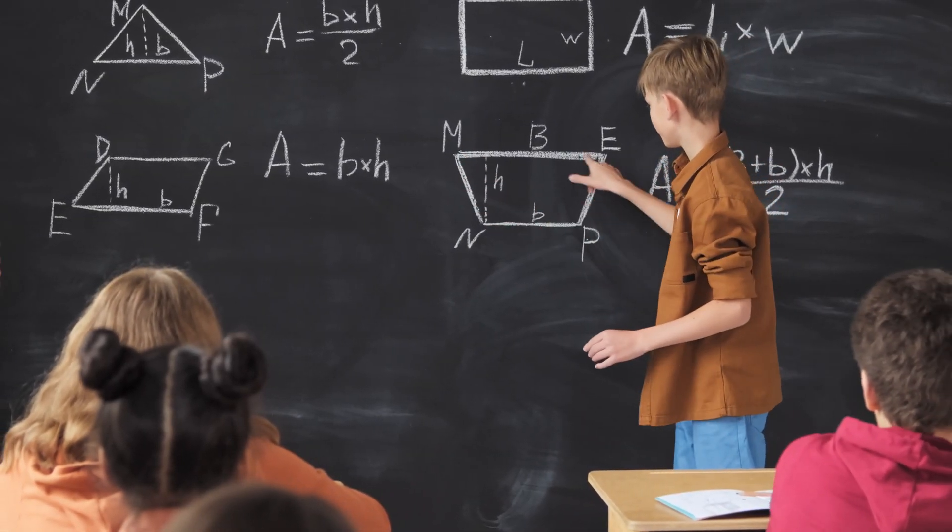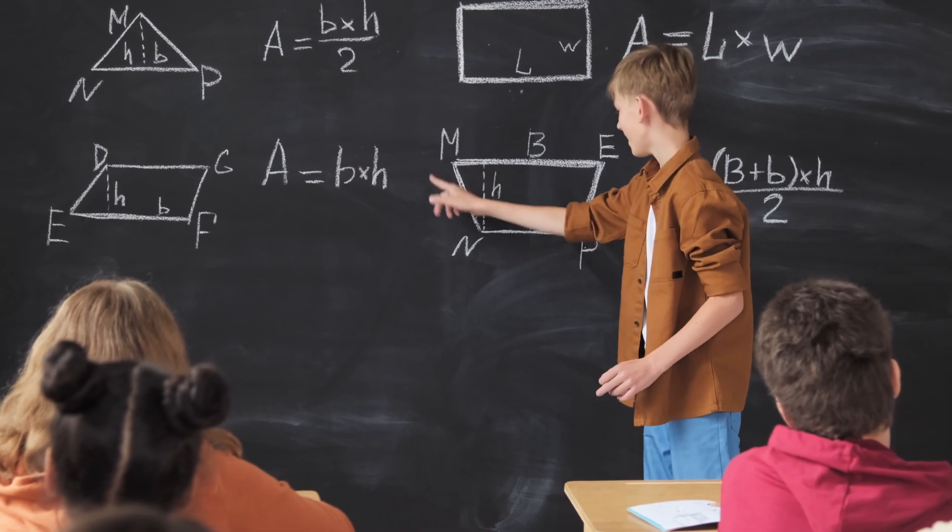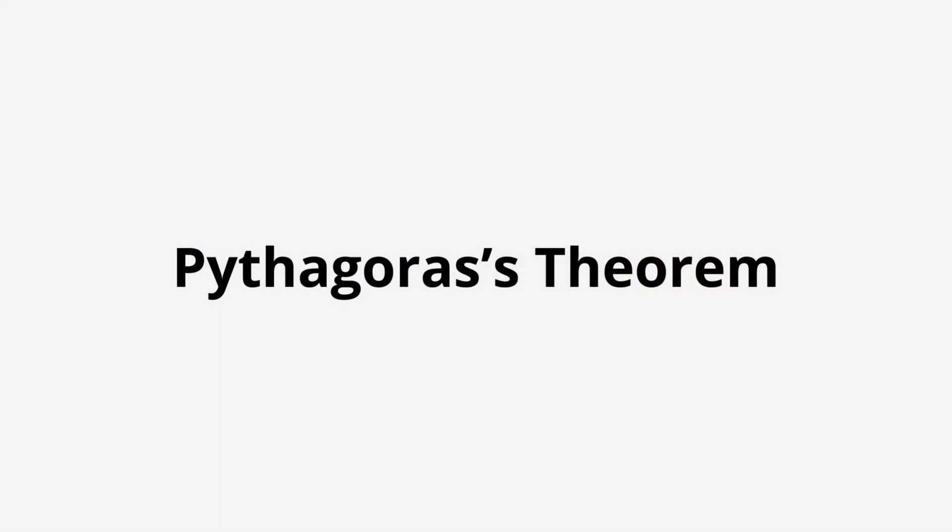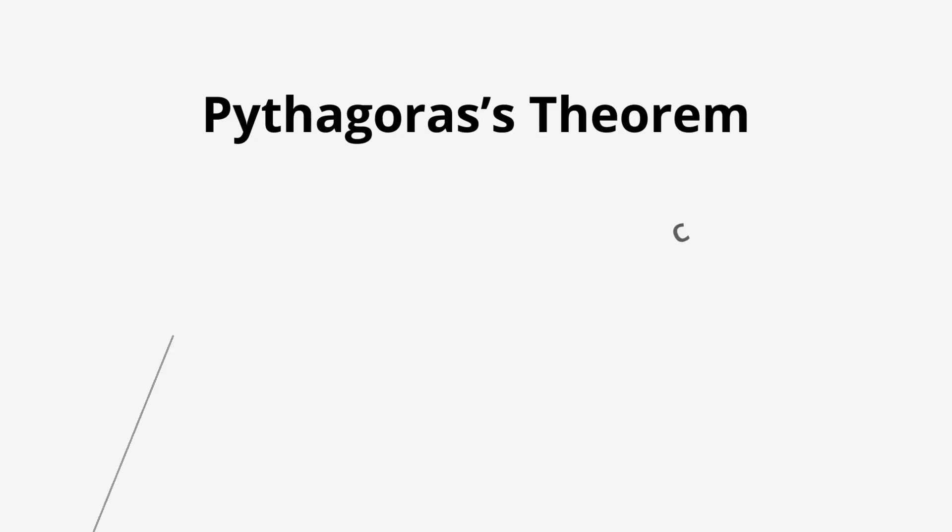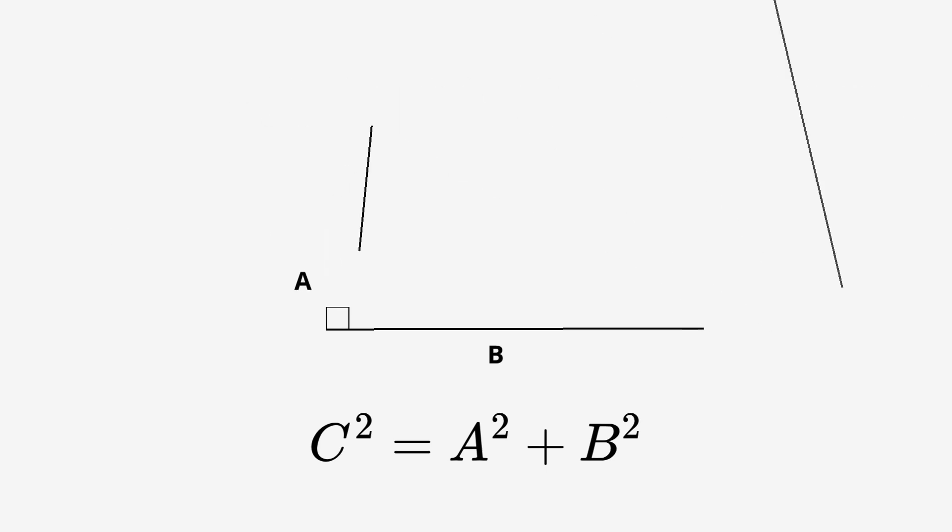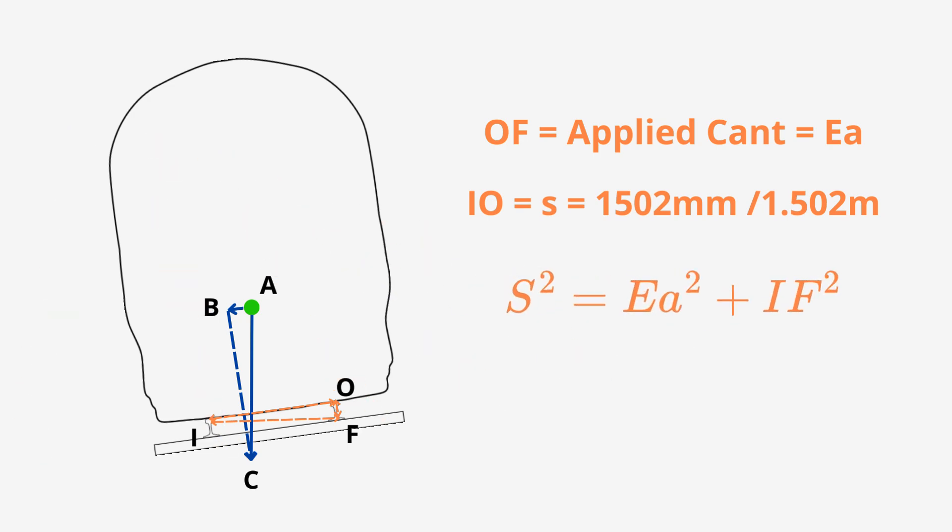Really stretching that maths brain right back to school now, aren't we? Trust me, I've had the same thing when looking into all of this. Pythagoras' theorem says that if you have a right-angled triangle, the lengths of the sides are linked, with the square of the hypotenuse being equal to the squares of the other two sides added together. So, we know that OF is EA and IO is S. Put them in and rearrange gives us IF equals the square root of S squared minus EA squared.